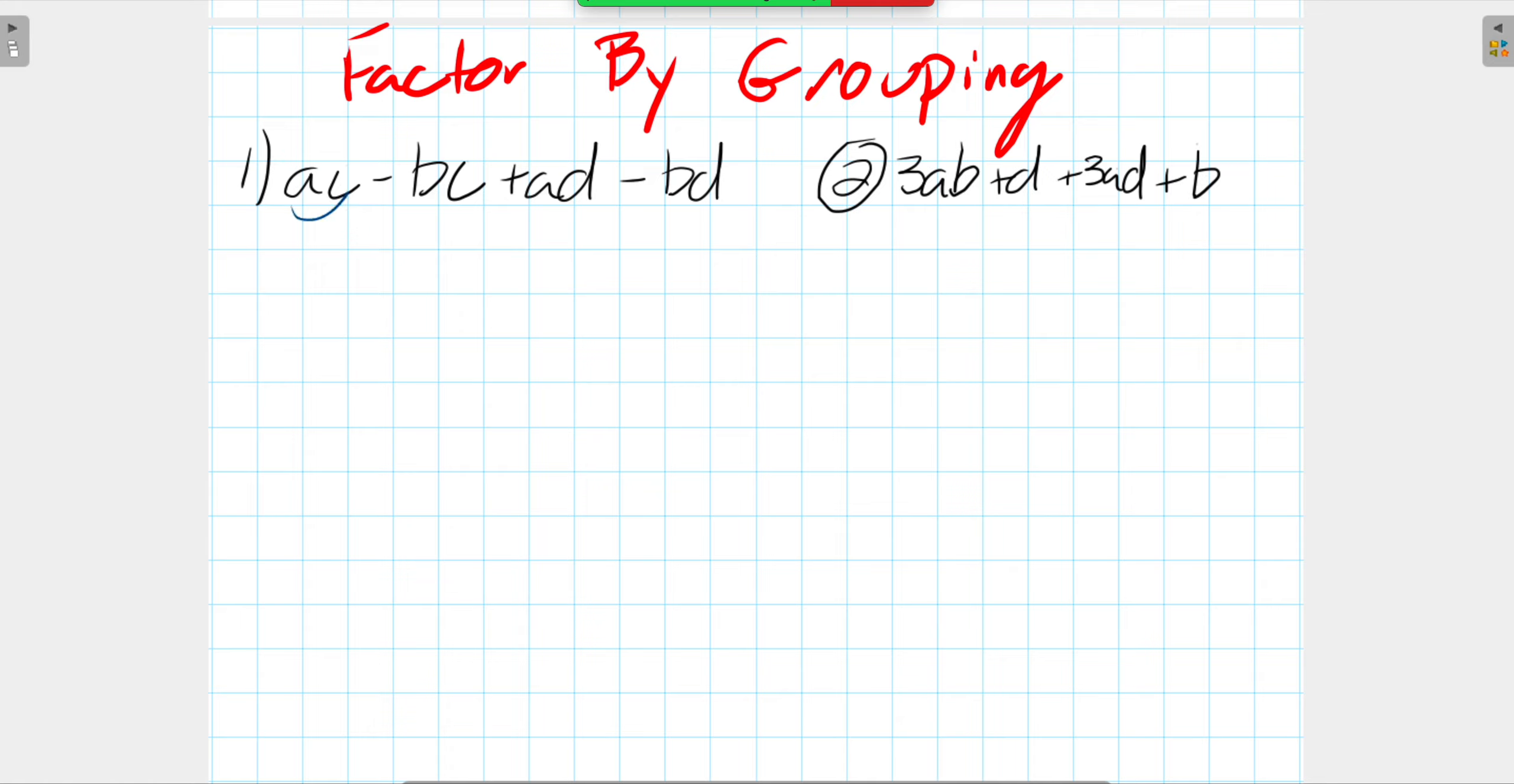In this case, we have one, two, three, four different terms. What we're going to try to do is look for common terms between pairs of these. So we're going to common factor or group factor pairs of them.